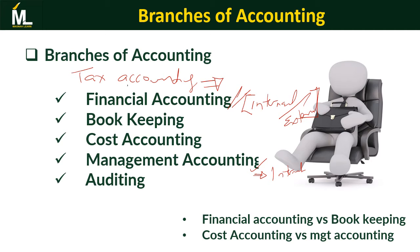Bookkeeping is the first step in accounting — the data entry, vouchers, and all the recording in books. The information at that stage does not aid decision making on its own, but when analyzed by an accountant it becomes useful accounting information. Cost accounting looks at the firm's cost of production, identifying ways to reduce costs with the aim of making profits.